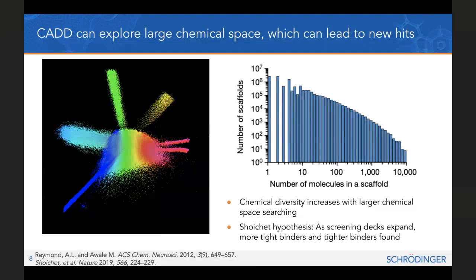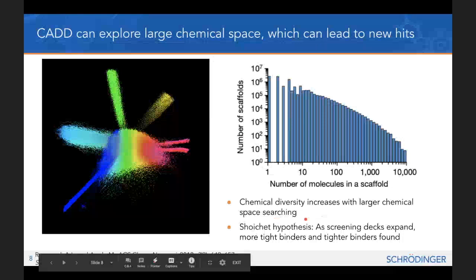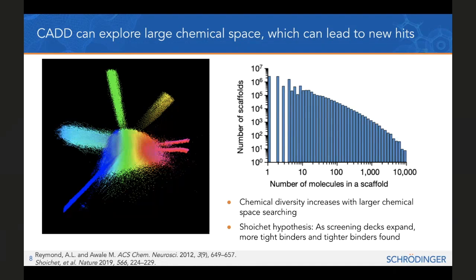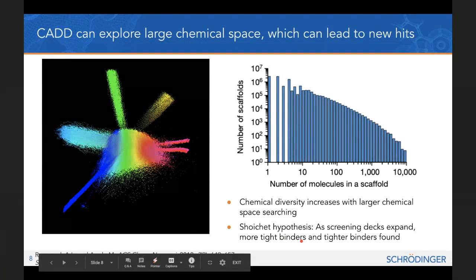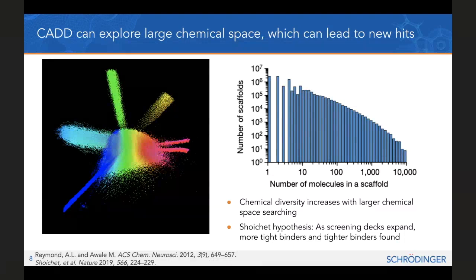More recently, a paper out of the Shoykat lab posed the question: is bigger better? Do evaluating ultra-large libraries truly get you a bigger picture of chemical space, or are you just circling around the same area? They found that chemical diversity does increase with larger chemical space searching, and put forward the hypothesis that as screening decks expand in size, more tight binders and tighter binders will also be found. So we are going to look very broadly, covering as much chemical space as we can.